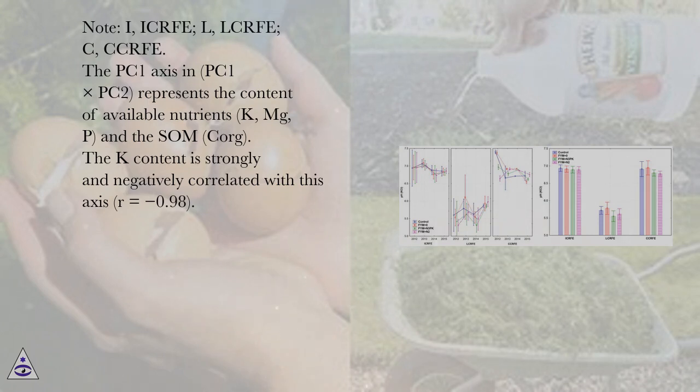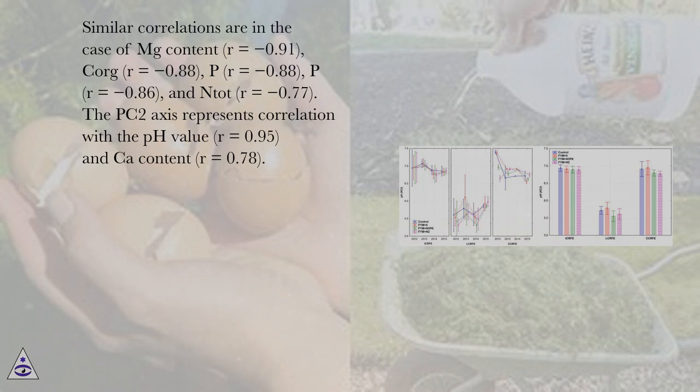The K content is strongly and negatively correlated with this axis (r = -0.98). Similar correlations are in the case of Mg content (r = -0.91), CORG (r = -0.88), P (r = -0.88), P (r = -0.86), and NTOT (r = -0.77). The PC2 axis represents correlation with the pH value (r = 0.95) and Ca content (r = 0.78).